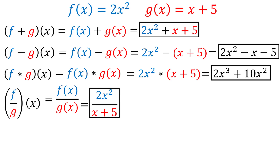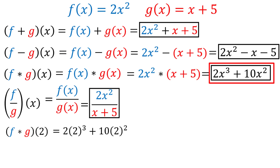You could be asked to evaluate one of these function combinations, which might look something like f times g of 2. This just means plug in 2 into your f times g of x function, which we found earlier to be 2x³ + 10x². When we plug 2 in, we get 2(2³) + 10(2²), which simplifies to 2(8) + 10(4), or 16 + 40, which equals 56.